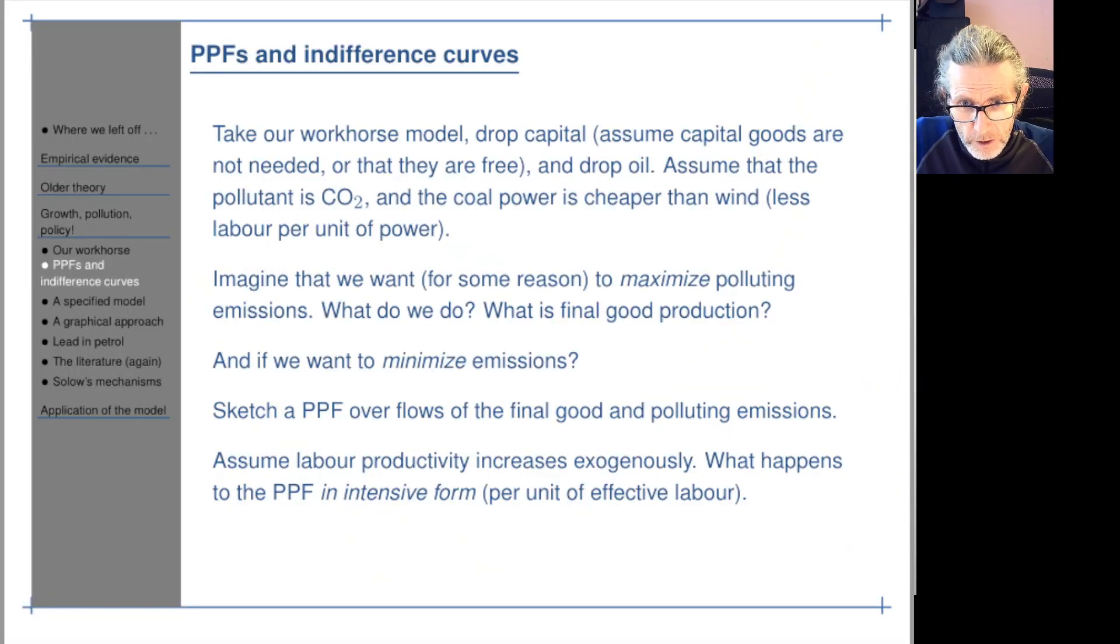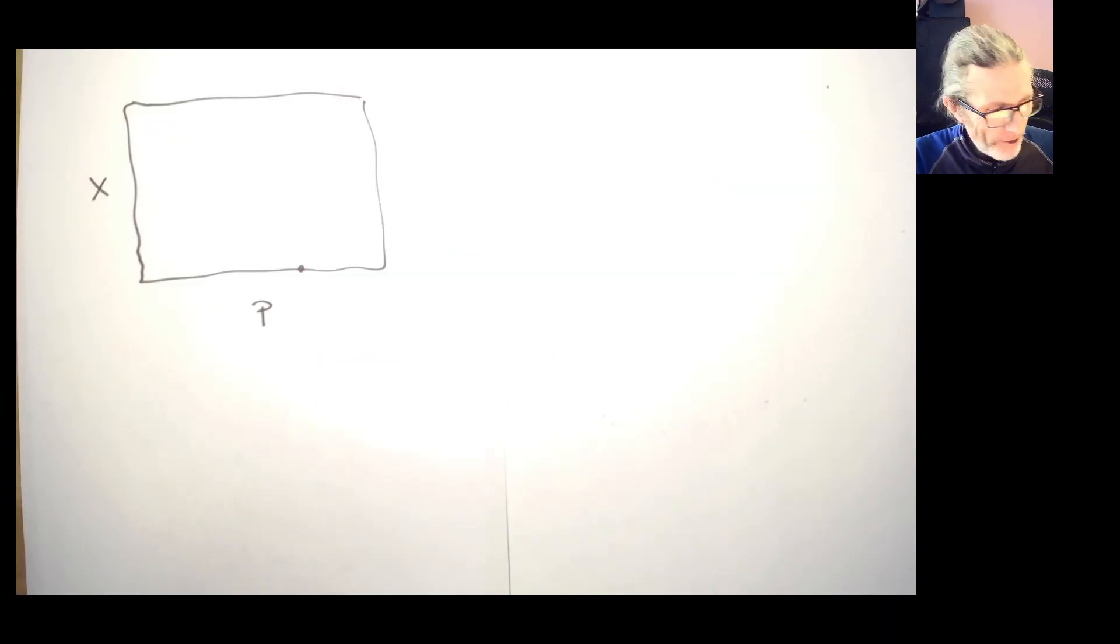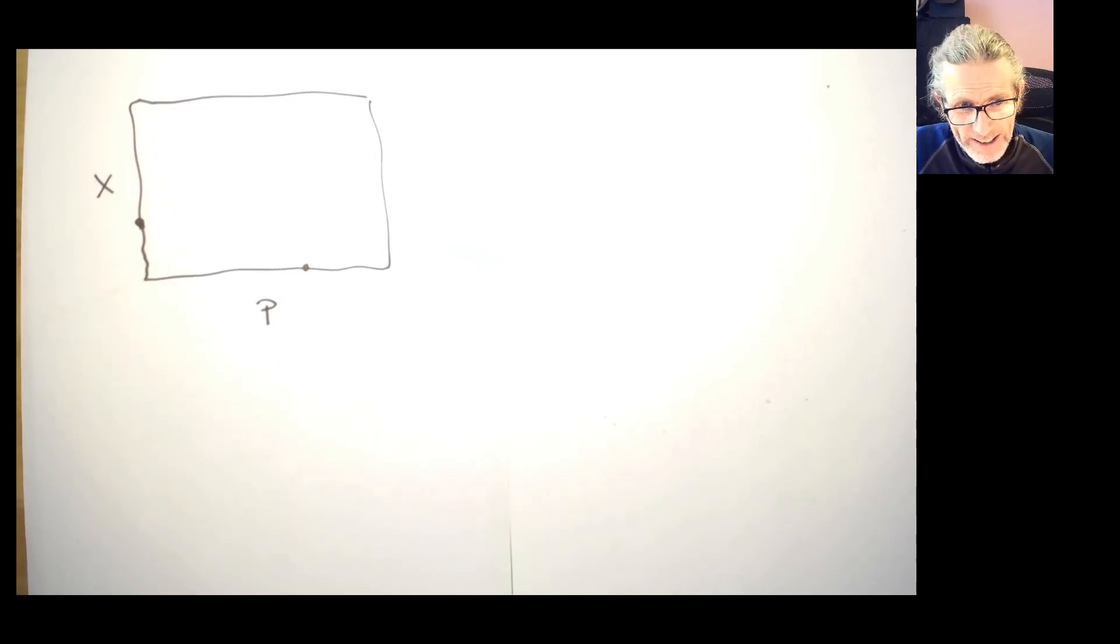If we want to maximize polluting emissions, we'll end up with no final good, with no consumption of the final good. We can't produce more pollution than that. What if we want to minimize emissions? Well, in this model, emissions are carbon dioxide. There's no capital. We just use the windmills. Then we will get some final good production, and we'll get zero emissions. That gives us another point on our PPF out here. Zero pollution, positive production.